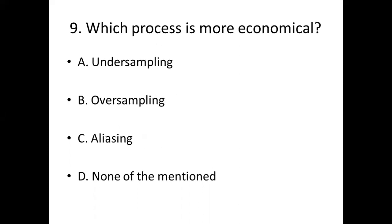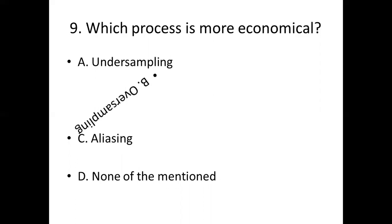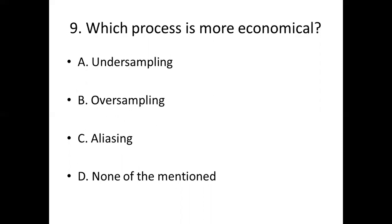Question 9: Which process is more economical? Option A: undersampling. Option B: oversampling. Option C: aliasing. Option D: none of the mentioned. Answer: Option B — oversampling.